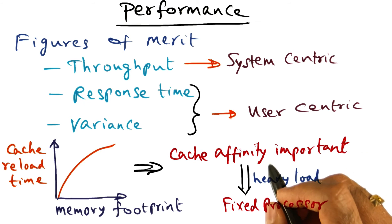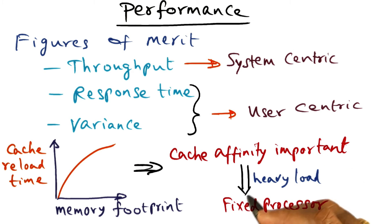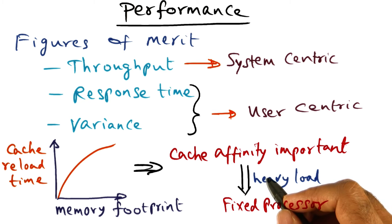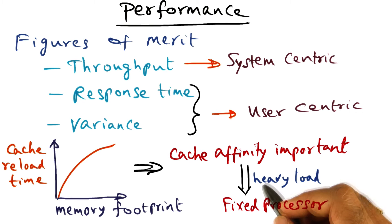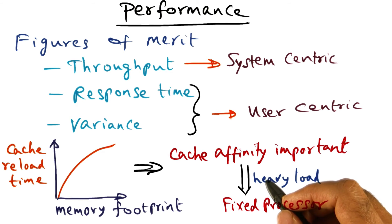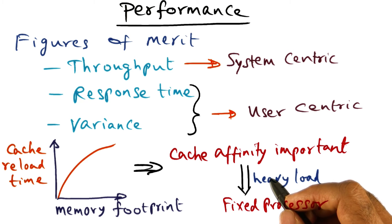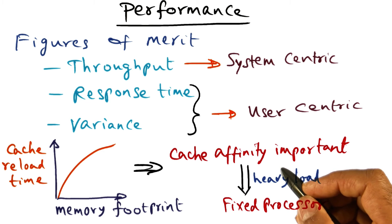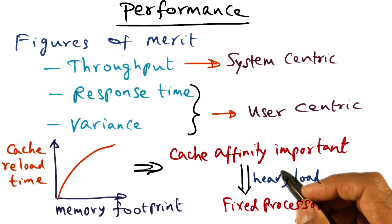Another interesting wrinkle to picking a scheduling policy is the idea of procrastination. Normally we think of the scheduler: when a processor is looking for work, it goes to the run queue and says it needs to do something and picks the next thread to run on itself. Perhaps procrastination may help.